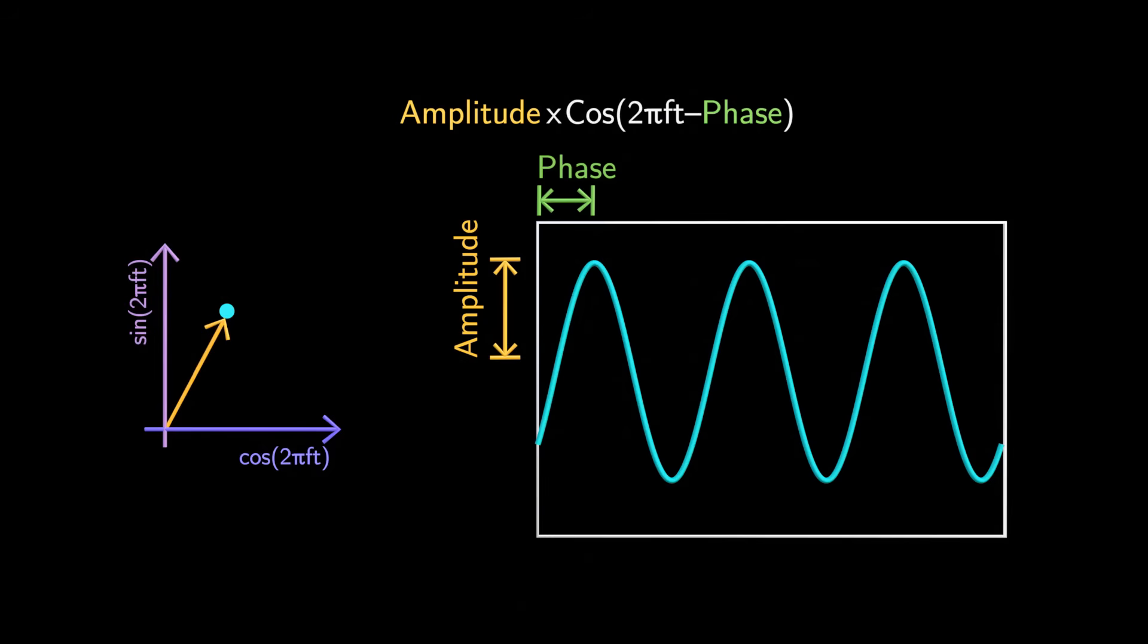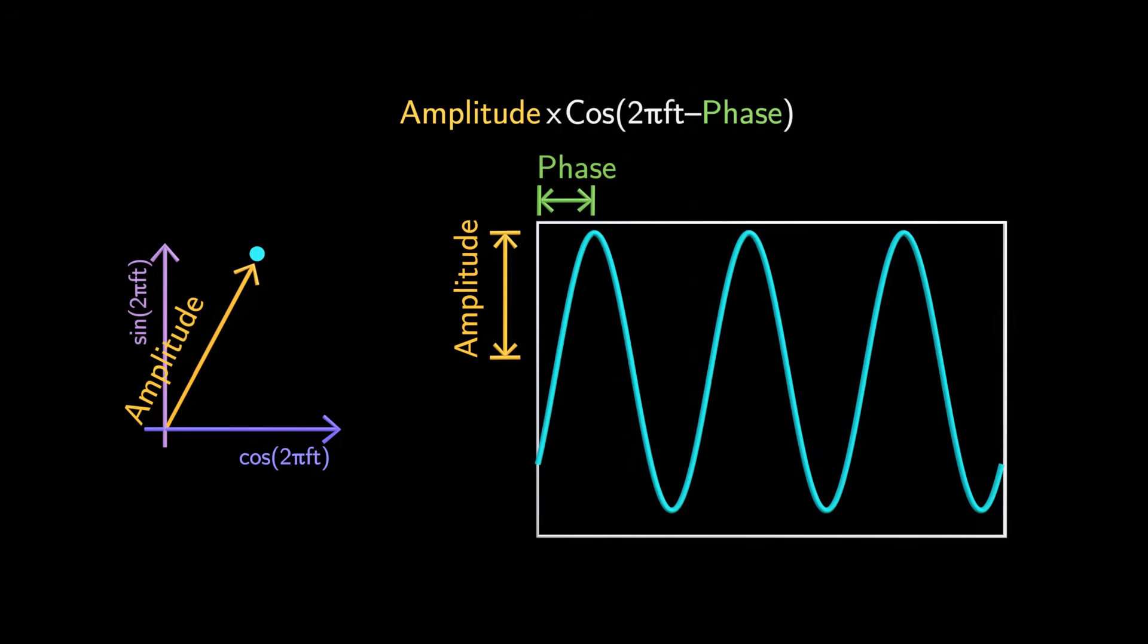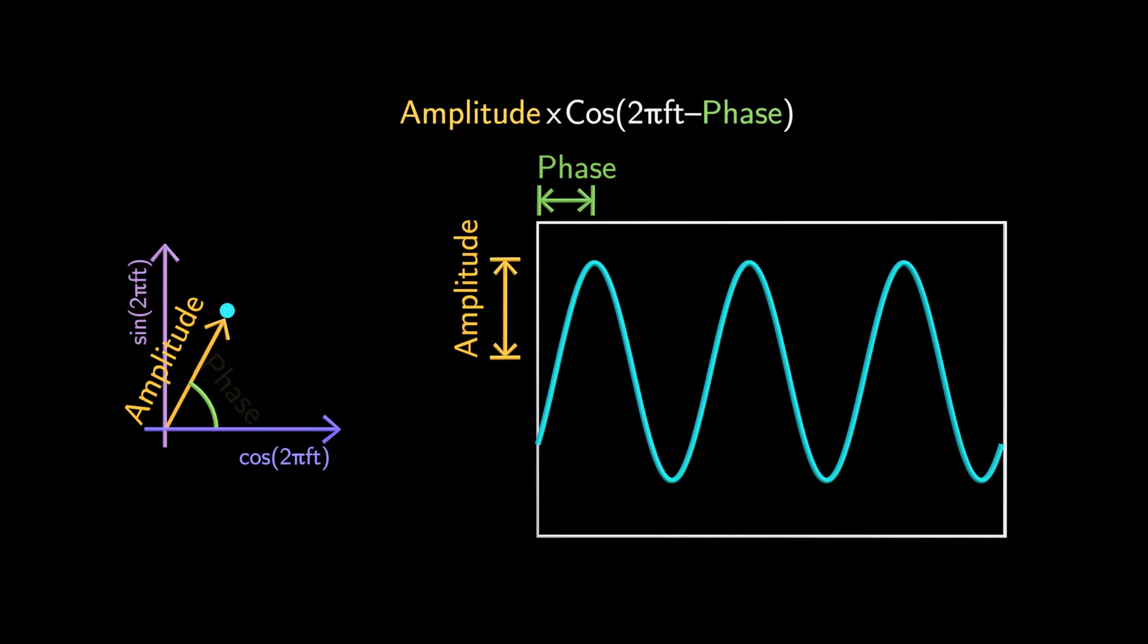The length of this vector represents the amplitude of the wave. So if we extend the vector, we're increasing the wave's amplitude. Similarly, the angle of the vector indicates the phase of the wave.